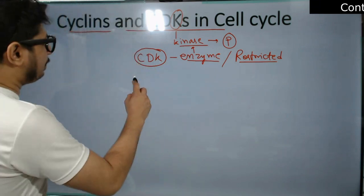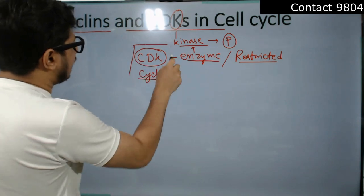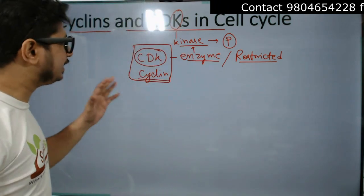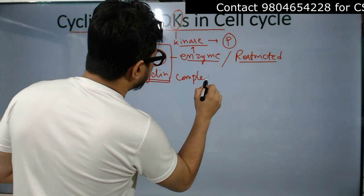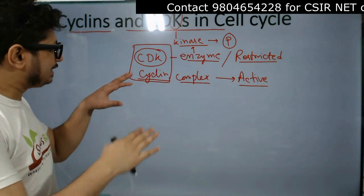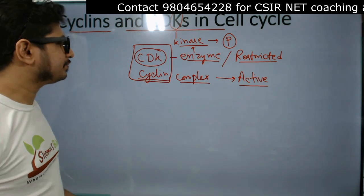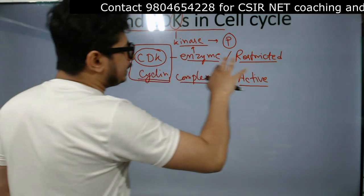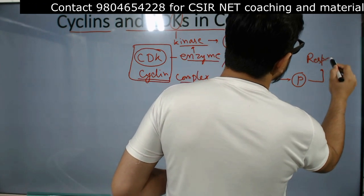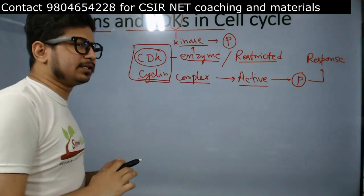CDK will form a cyclin-CDK complex. This cyclin-CDK complex is active, and although CDK will phosphorylate proteins, without the presence of cyclin it cannot do that. So the cyclin-CDK complex becomes active, it causes phosphorylation, and further response to the cell. That's how simple cyclin and CDK work together.